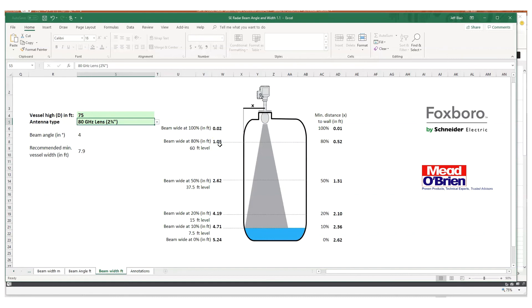So you can actually use these radar beam angle calculators to figure out how big the beam is going to be. Is it going to intersect a thermal well, a baffle, a heating coil, some other obstacle or internal obstacle that may be in the tank. And you can envision how big the beam is going to be and where it's going to go.